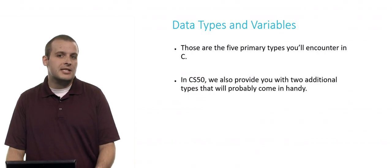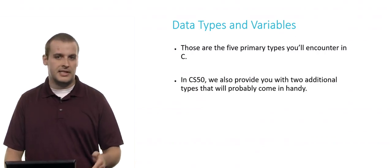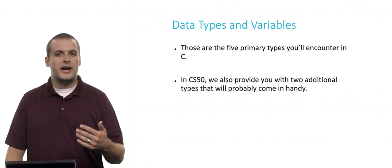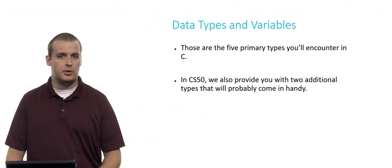All right. So those are the five types that you'll encounter that are built into C. But in CS50, we also have a library, CS50.h, which you can include and which will provide you with two additional types that you'll probably be able to use on your assignments or just working generally programming.